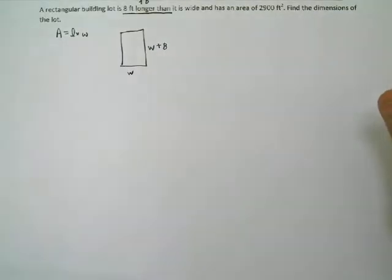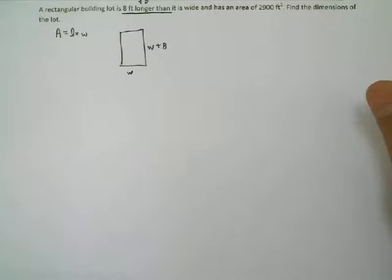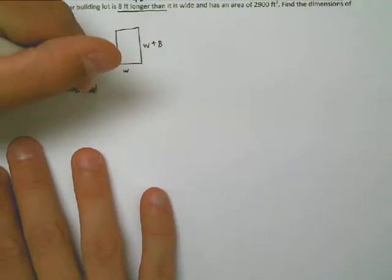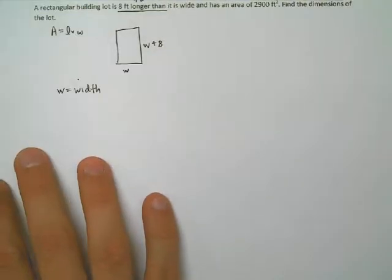And we know that it has an area of 2,900 square feet, so we want to find the dimensions of the lot, like 10 by 15 or 20 by 25 or something like that. So, step one, we need to identify our variable. W is the width, right? That's the first step in solving the problem. Let's let W equal the width.